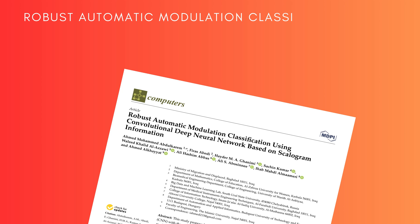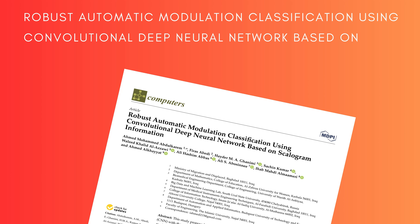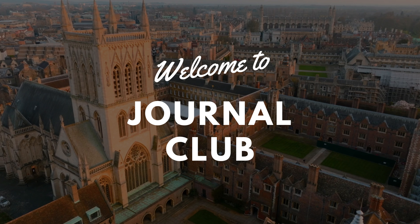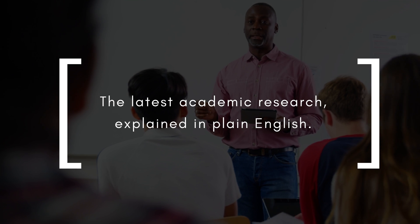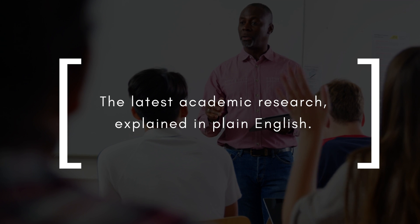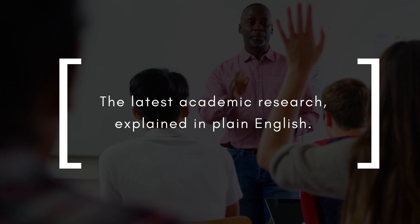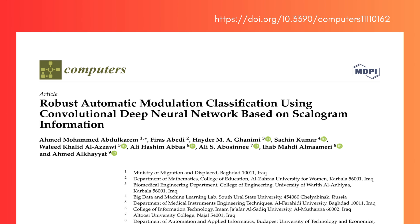Robust Automatic Modulation Classification Using Convolutional Deep Neural Network Based on Scalagram Information. Welcome to Journal Club, the latest academic research explained in plain English. Today we're looking at this paper from MDPI's Journal of Computers, authored by Abdukharam et al. from the Ministry of Migration and Displaced in Iraq, published open access under a CC BY license.